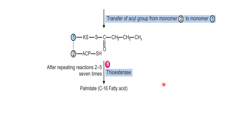For the synthesis of long-chain fatty acids with an even number of carbons, acetyl-CoA acts as the primer. For the synthesis of long-chain fatty acids with an odd number of carbon atoms, propionyl-CoA acts as the primer.